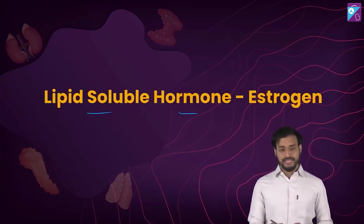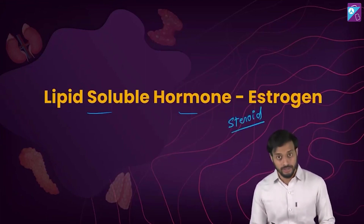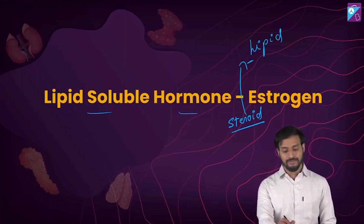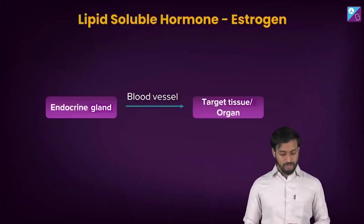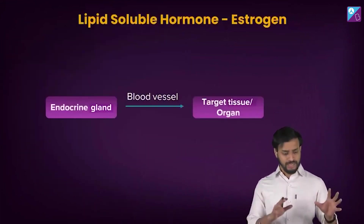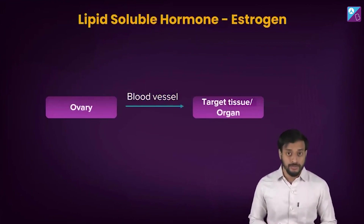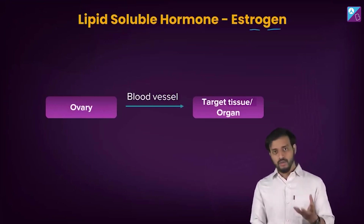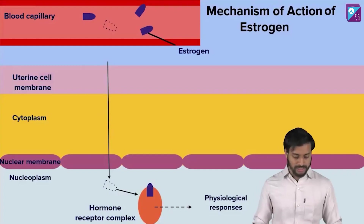Let me take an example of a lipid soluble hormone — estrogen. Estrogen is a steroid hormone, and steroids are lipid soluble. Similar to the general mechanism: the endocrine gland secretes into the blood vessel, and it travels to the target organ or tissues. I'm talking about the ovary secreting estrogen, traveling through the blood vessels, reaching the target tissue — the uterus, for example.